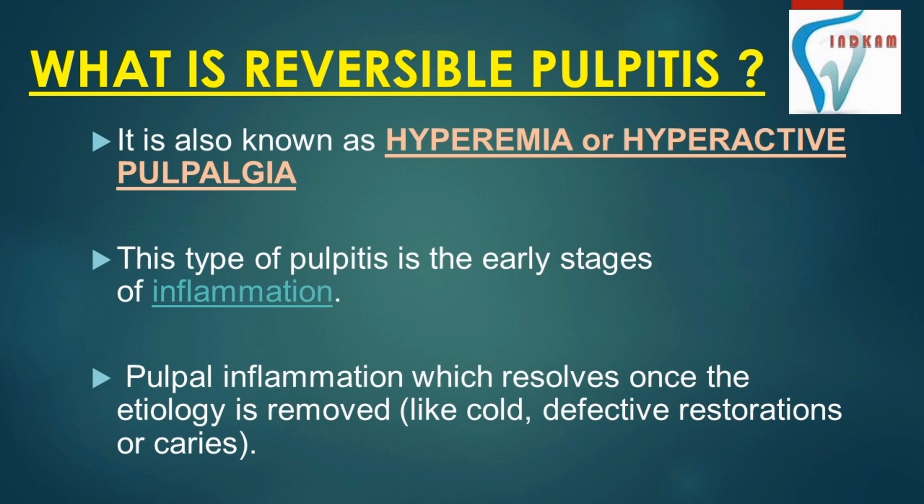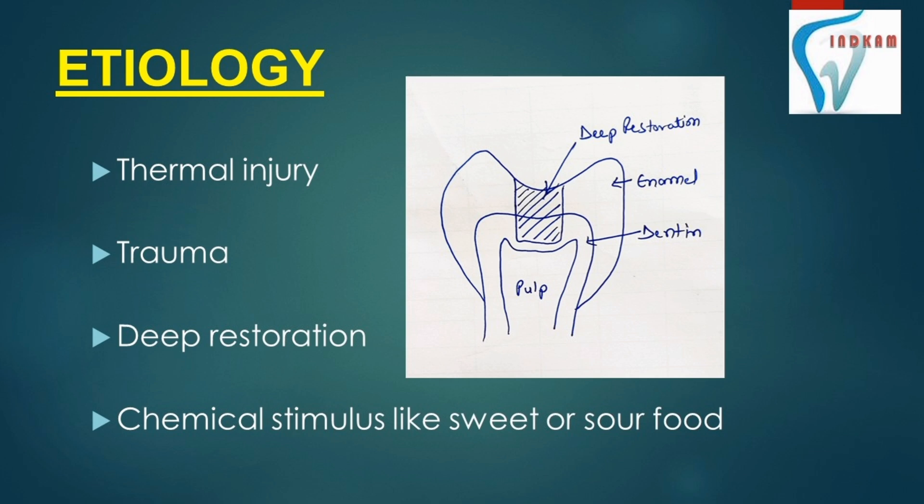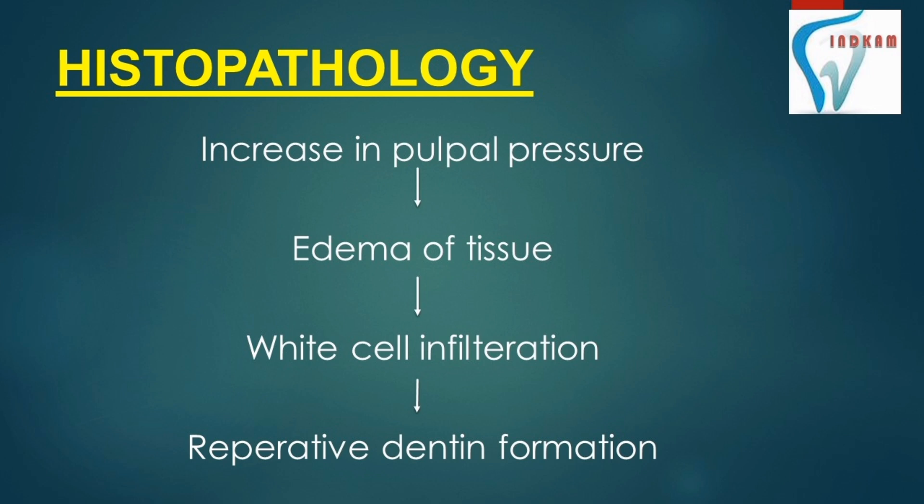Coming to the etiology, it may be due to thermal injury, some trauma, or any deep restoration. As you can see in this diagram, the restoration is reaching very deep into the dentine and very near to the pulp. Chemical stimuli like sweet or sour food can also cause reversible pulpitis.